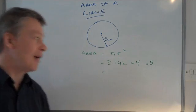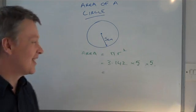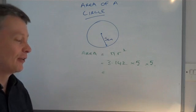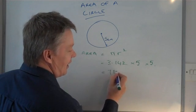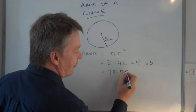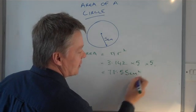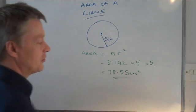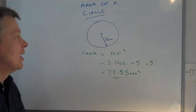Now using my magic calculator, which I calculated earlier, if I multiply all of those together, it will give me 78.55 centimeters squared. And that's to two decimal places.